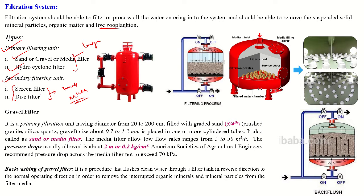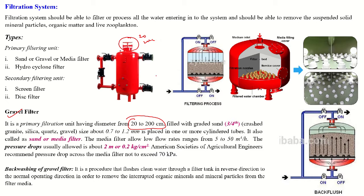The first one is the sand or gravel filter. The gravel filter is a primary filtration unit having a diameter of 20 to 200 centimeters. The entire filter is filled with sand — crushed sharp granite like silica or quartz — with a particle size of 0.7 to 1.2 mm, placed in one or more cylindrical tubes. This filter is also called a sand or media filter. Below the sand, there are small filtration nozzles which help accumulate algae in the filter.